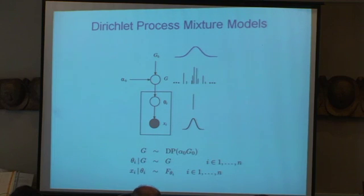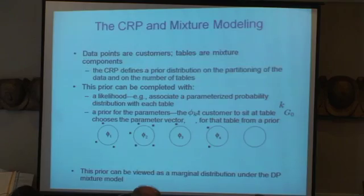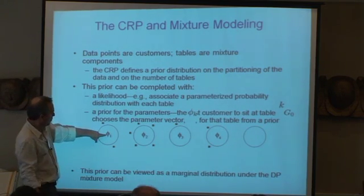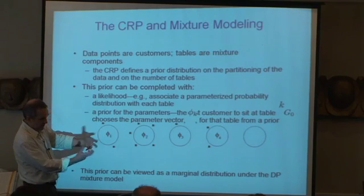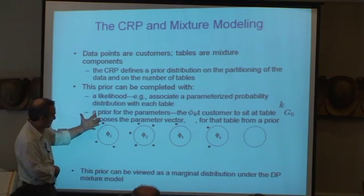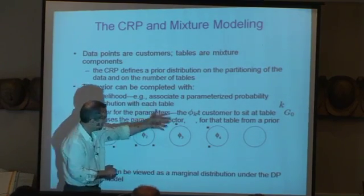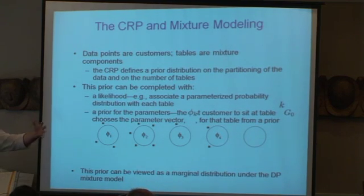That happens again and again — it's something called de Finetti's theorem that makes this happen, and I'm exploiting that in my research. If you want to use this for full probability mixture modeling, all you do is: the first person to sit at a table draws a parameter from some prior, and everybody else who sits at that table inherits that parameter. That parameter is like a cluster — maybe a mean and a covariance matrix for a Gaussian. We have log n clusters, growing as a function of n. It's not fixed, it's not a parametric distribution — the number of parameters is growing at rate log n, so this is non-parametric. Non-parametric doesn't mean you have no parameters — it means you have a growing number of parameters.